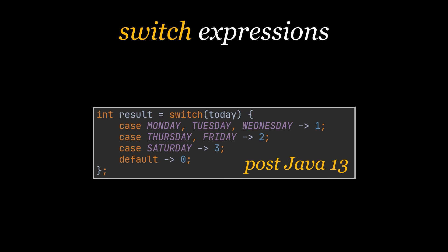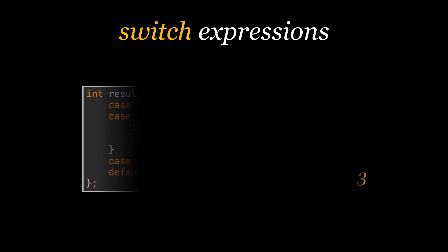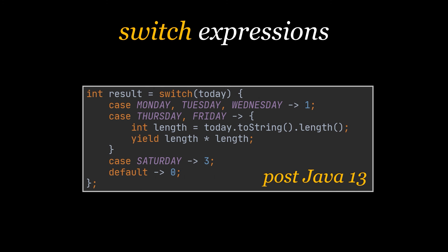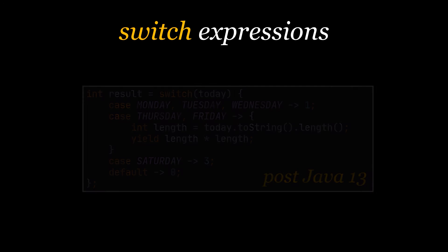Going a bit further, there is a possibility to actually write as much code as we would like on the right side of these expressions. To do that we will have to use the yield keyword. As you can see in this example, for the Thursday-Friday case we expand our code block, and after we are done we will yield the value we want our switch expression to return.